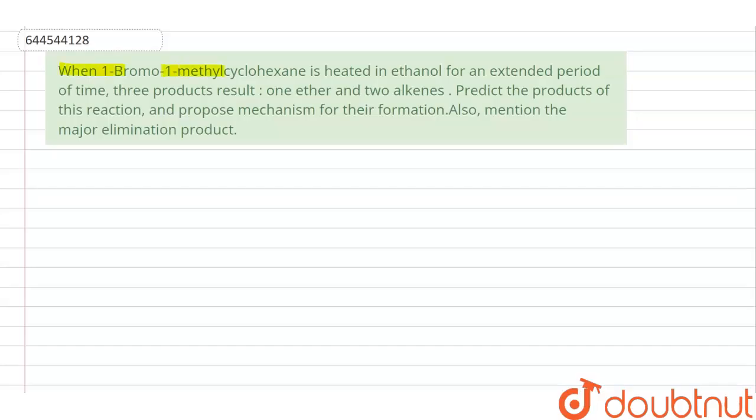When 1-bromo-1-methylcyclohexane is heated in ethanol for an extended period of time, three products result: one ether and two alkenes. Predict the products of this reaction and propose mechanism for their formation. Also mention the major elimination product.